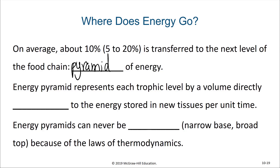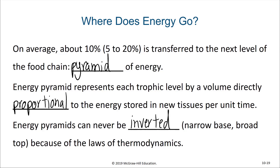The energy pyramid represents each trophic level by a volume directly proportional to the energy stored in new tissue per unit time. Energy pyramids can never be inverted — meaning narrow at the base and broad at the top — because of the laws of thermodynamics. It would be impossible for there to be more energy in a second level of the energy pyramid than in the first.